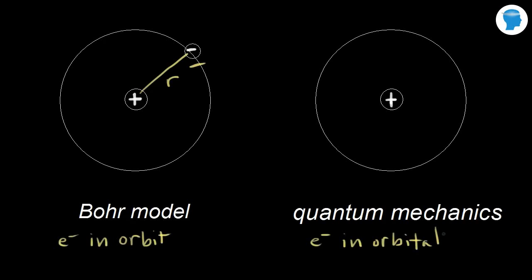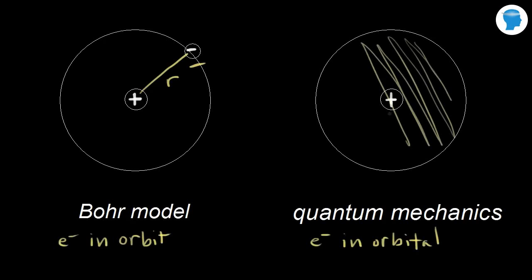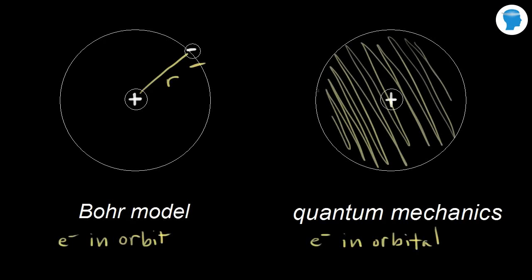For hydrogen, imagine a sphere — a three-dimensional volume around the nucleus. Somewhere in that sphere, we're most likely to find the one electron of hydrogen.